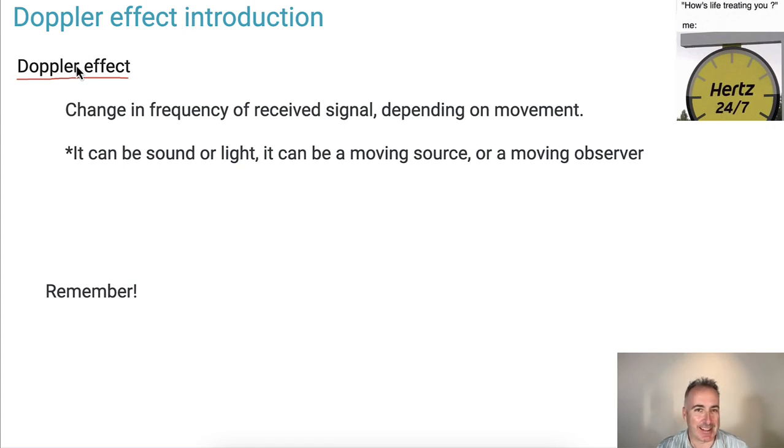So what's the Doppler effect? This is an effect that happens when an object is emitting either sound or light. If it's moving towards or away from an observer, or if the observer is moving towards or away from the source, then there's going to be a change in what you observe - the frequency is going to change. So it's change in frequency depending on movement, and it can be sound or light, moving source or moving observer.